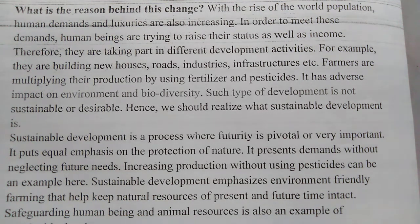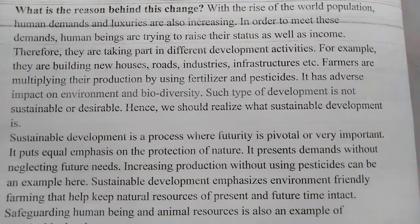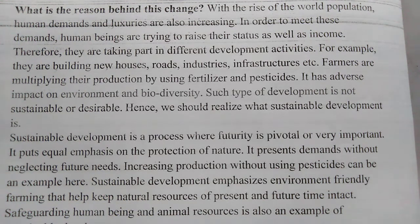Sustainable development is a process where the future is very important. It puts equal emphasis on the protection of nature — we continue development activities but we should protect nature. It presents development without neglecting our future. Increasing production without using pesticides can be an example of sustainable development. Sustainable development emphasizes environment-friendly farming that helps keep natural resources of the present and future time intact. Safeguarding human beings and animal resources is also an example of sustainable development goals.